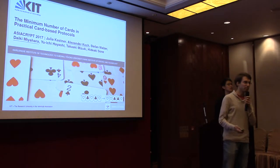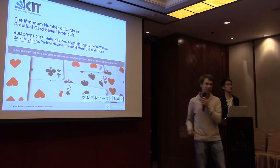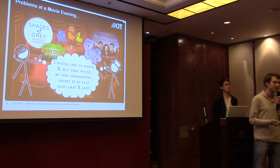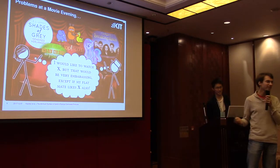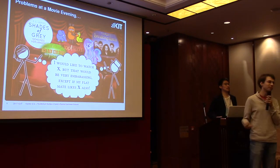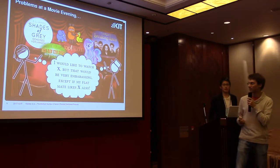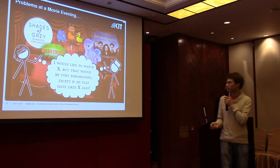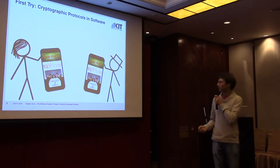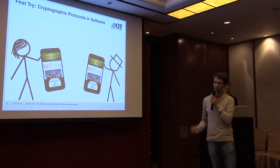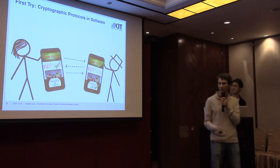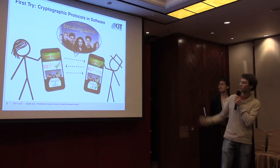Let's first consider a scenario which may arise in real life. Suppose you want to have a movie evening and would like to watch some movie, but that would be embarrassing except if your flatmate likes it also. The most natural thing would be running cryptographic protocols for this — we have private set intersection. We can write a short app for our smartphones, players select their choices, run the protocol, and in the end it outputs which movie to watch.